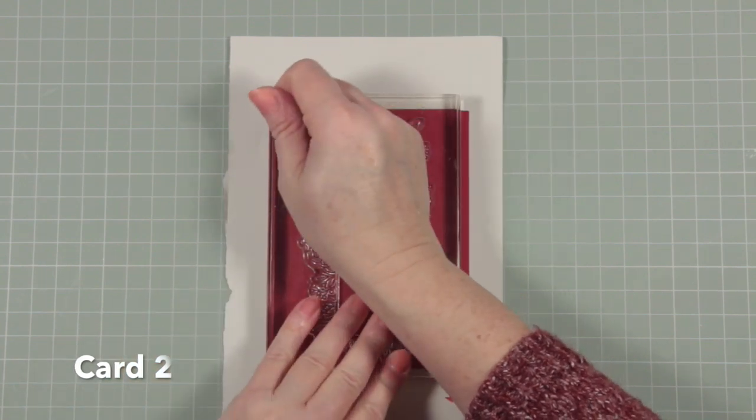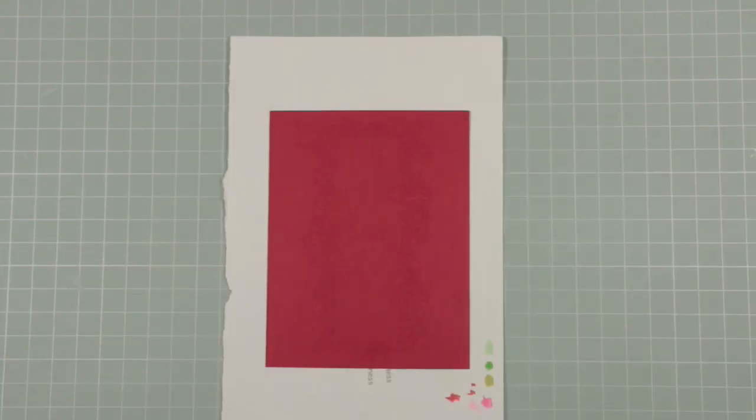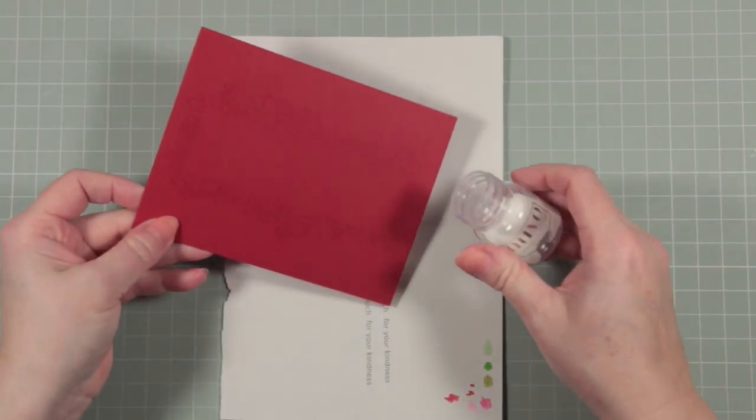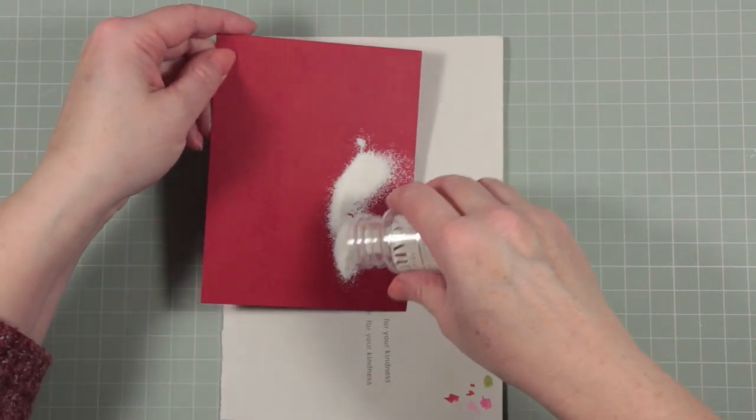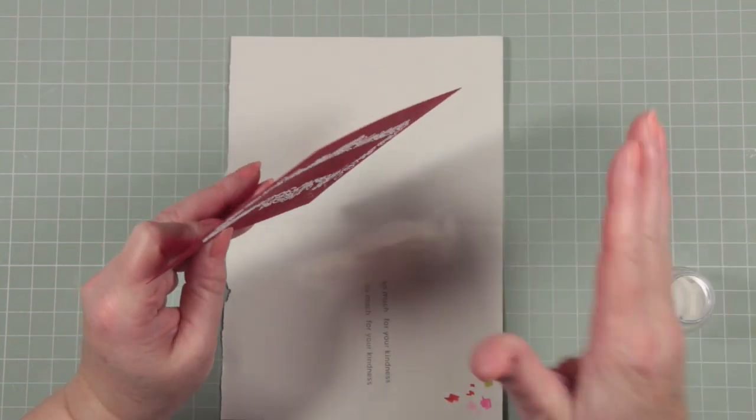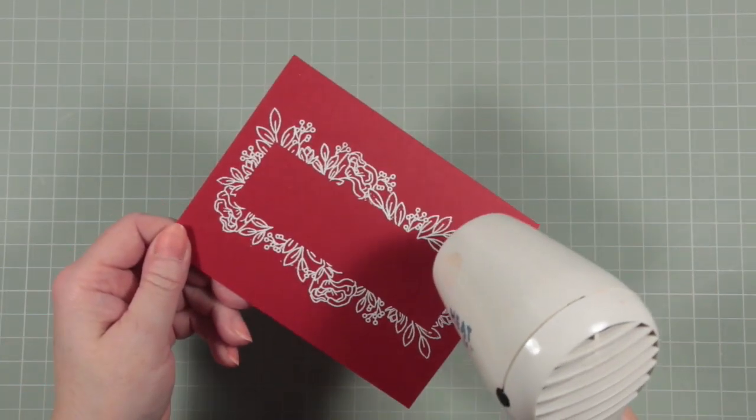For our second card I've got the large floral border and I've inked this up with clear embossing ink and now I'm going to sprinkle it with white embossing powder. Once I do this you'll actually be able to see the design on the card. I've chosen white embossing powder because of how well it shows up against the red background. It's very effective and I'm going to heat set this.